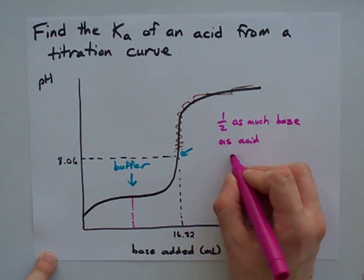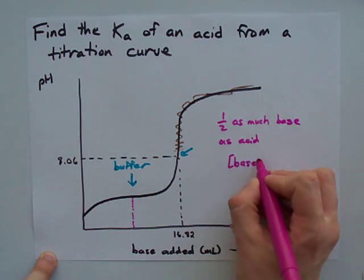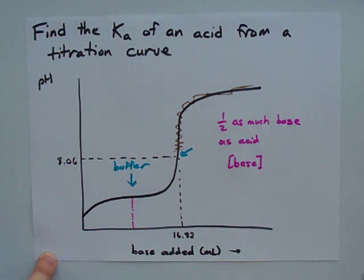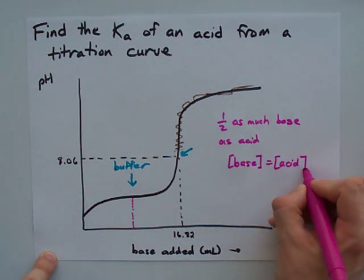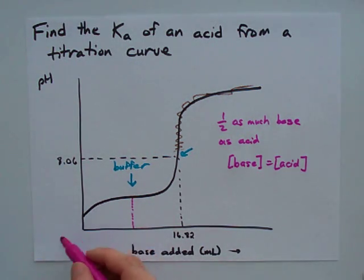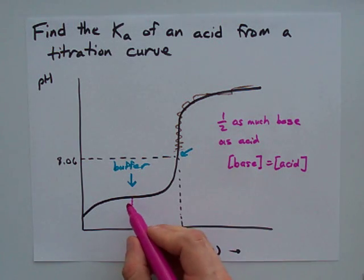Which means that in your solution, your concentration of base is equal to the concentration of your acid. You started with a full amount of acid, and you've titrated half of it away.